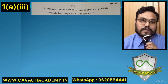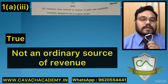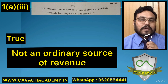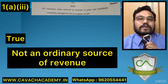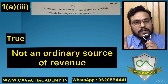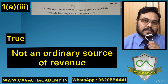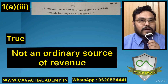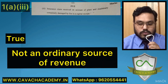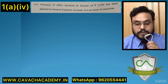Third question in 1a: insurance claim received on account of plant and machinery completely destroyed by fire — they say it is a capital receipt. The answer is TRUE. It is a capital receipt because the money coming in is not coming from regular sources of revenue like sales. When you normally sell a fixed asset the money received is a capital receipt; similarly, a fixed asset destroyed by fire with the insurance company paying for it is also a capital receipt.